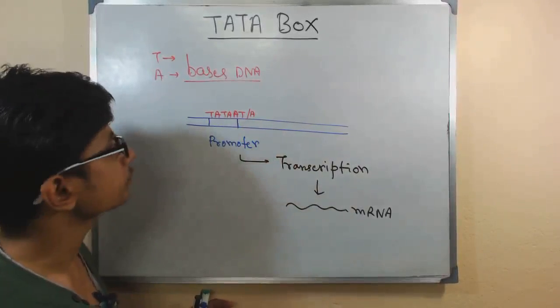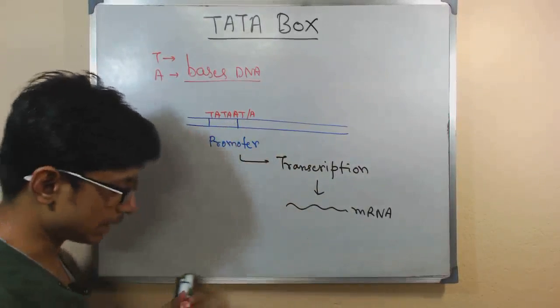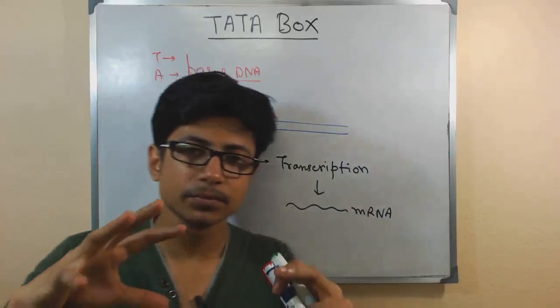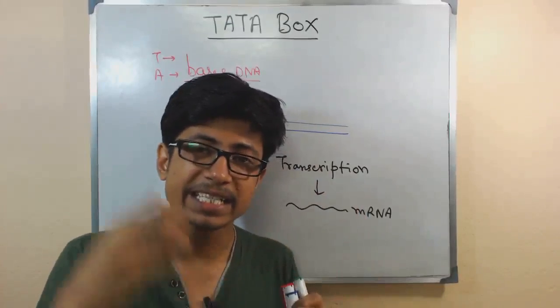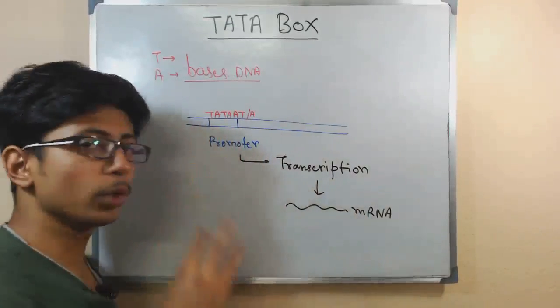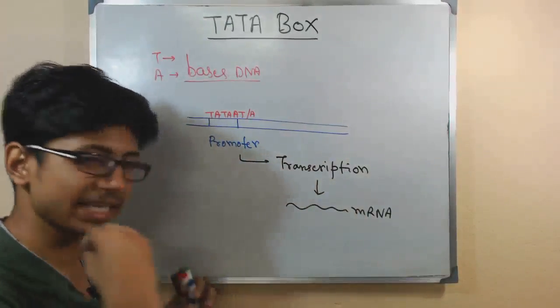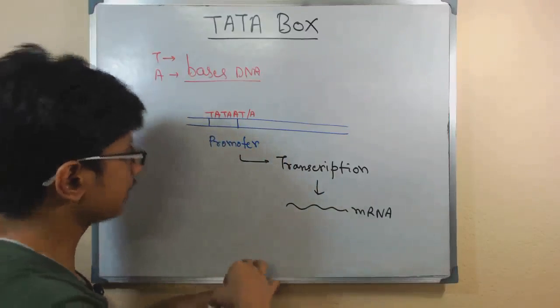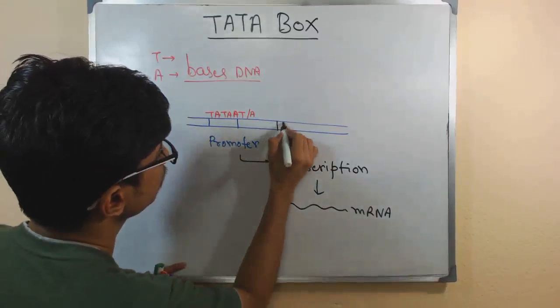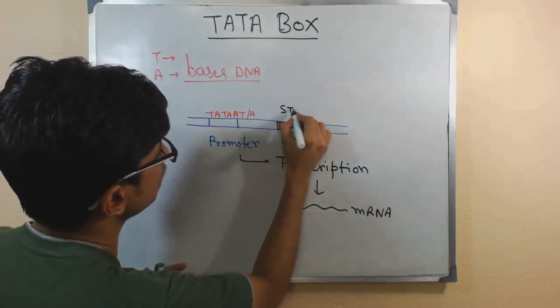Now promoters are the sections where the RNA polymerase first binds, attaches, and then it scans. When it finds the promoter, then only it can start, it can find the start site of the transcription which is further downstream. This is the start site.